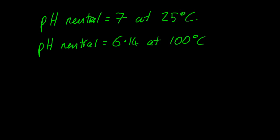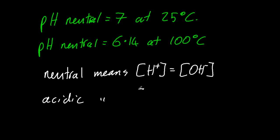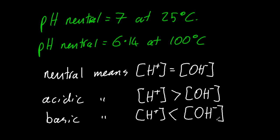So what does neutral actually mean? Well, neutral means that the hydrogen ion concentration is equal to the hydroxide ion concentration. Acidic means there's more acid, and basic means there's more hydroxide. That's what it actually means. pH 7 doesn't mean neutral, unless it's at STP.